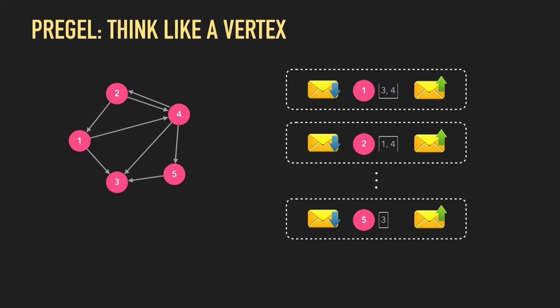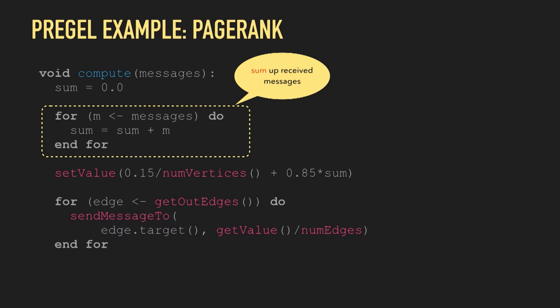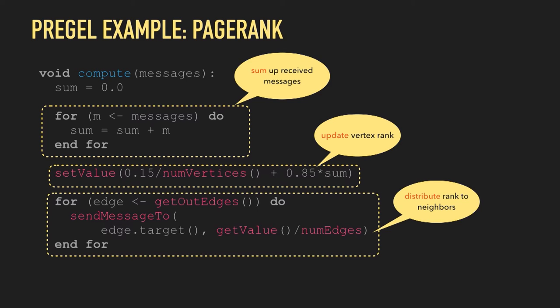The Pregel idea was: think like a vertex. In the spirit of MapReduce, you write a single user-defined function that is executed per vertex in the graph. Every vertex has access to an inbox of messages, to the neighbors, and produces messages for other vertices. Computation proceeds in synchronized iterations called super steps. During a super step, each vertex executes the compute function and produces the new vertex value and sends messages to the other vertices. For example, you could write PageRank in this model: a vertex sums up the messages, then sets the new vertex value, and finally redistributes the rank to the neighbors.